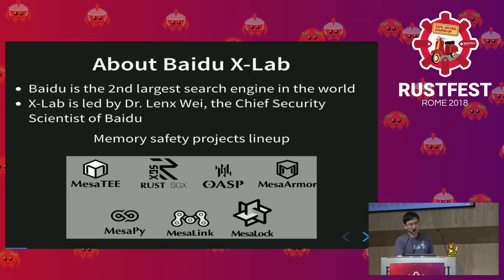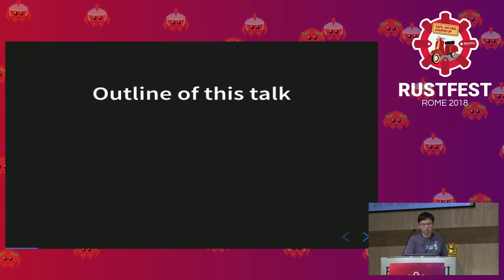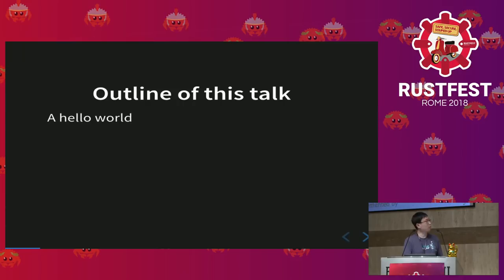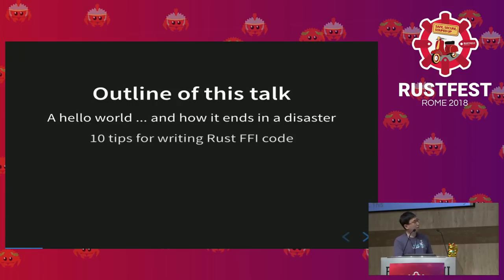If you were at RustFest Paris earlier this year, you may have seen our work about bringing Intel SGX to the Rust ecosystem, which is the Rust SGX project. In today's talk, I'm going to share the experiences, pitfalls, and lessons we learned when we implement OpenSSL APIs in Mesalink with 100% Rust code. We'll start from a simple Hello World FFI example, cover 10 patterns and anti-patterns in writing idiomatic FFI code, and finally a quick recap and future work.